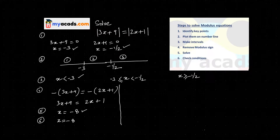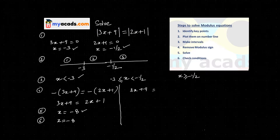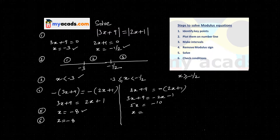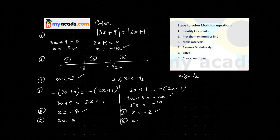Now I will look at the second interval, where x is between minus 3 and minus 1 by 2. In this interval, 3x plus 9 is positive, so I keep it as is. But 2x plus 1 is negative, so I keep a minus sign. This gives 3x plus 9 equals minus 2x minus 1, which simplifies to 5x equals minus 10, so x equals minus 2. Checking the condition: minus 2 lies between minus 3 and minus 1 by 2, so this condition is satisfied. x equals minus 2 is the second answer.